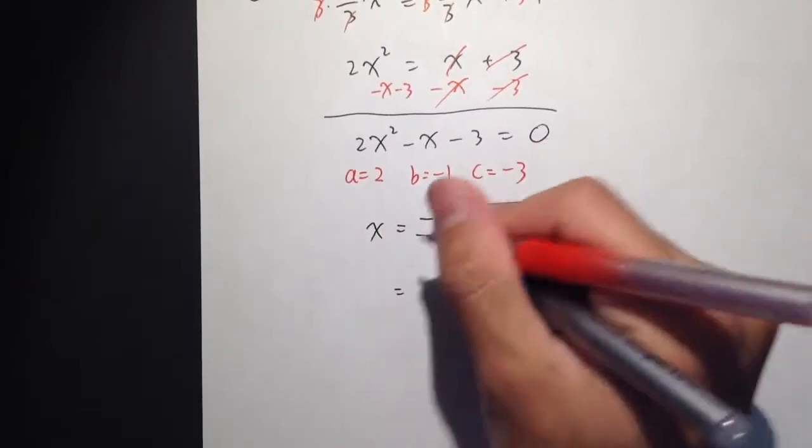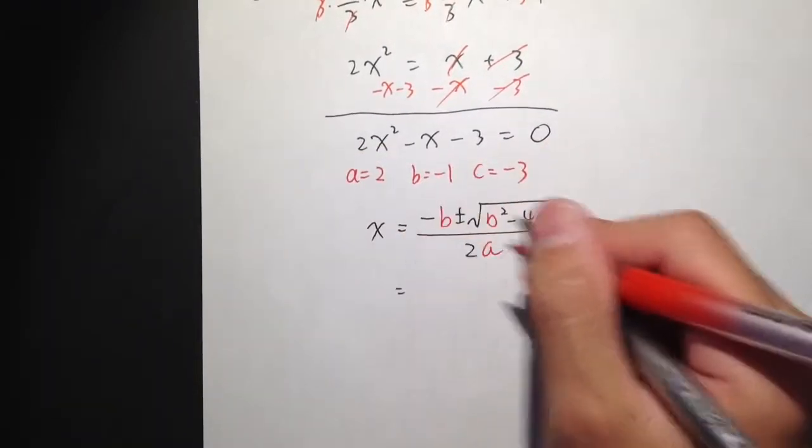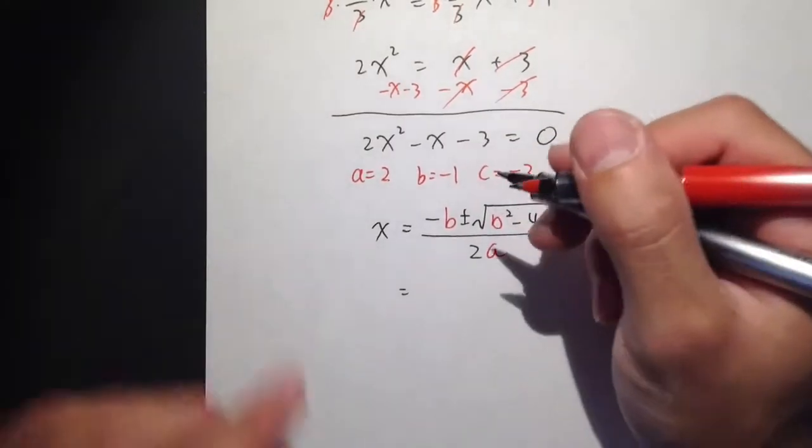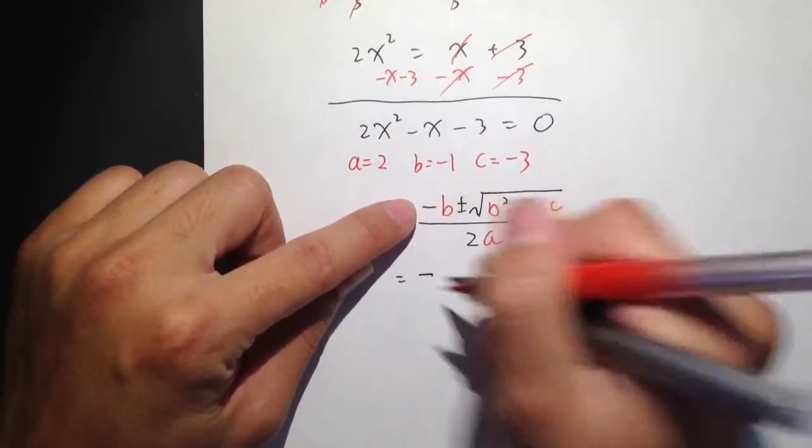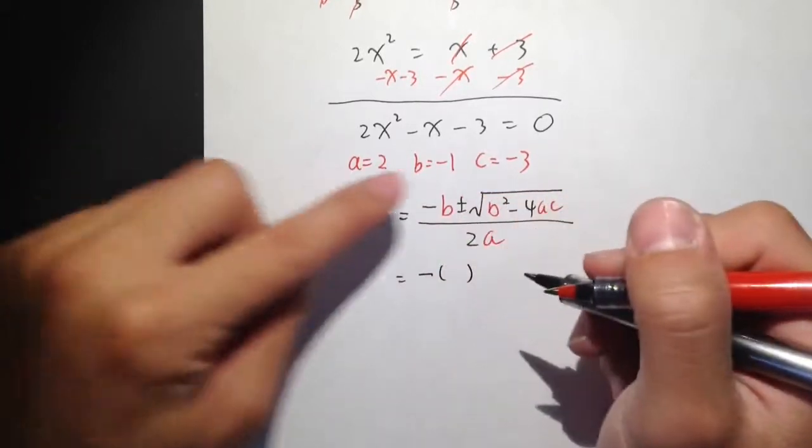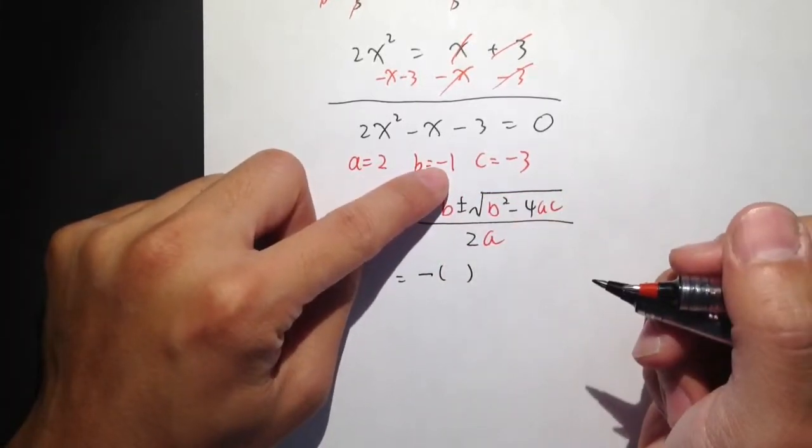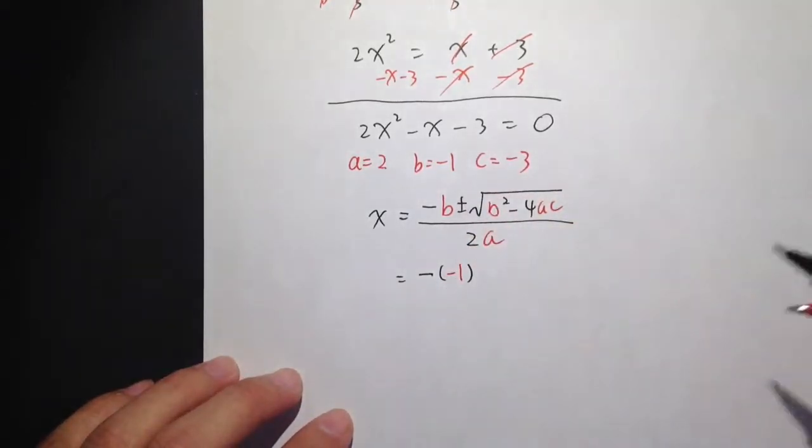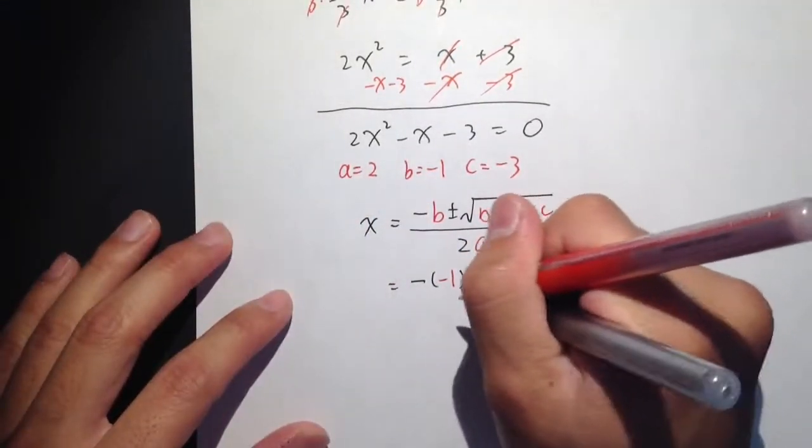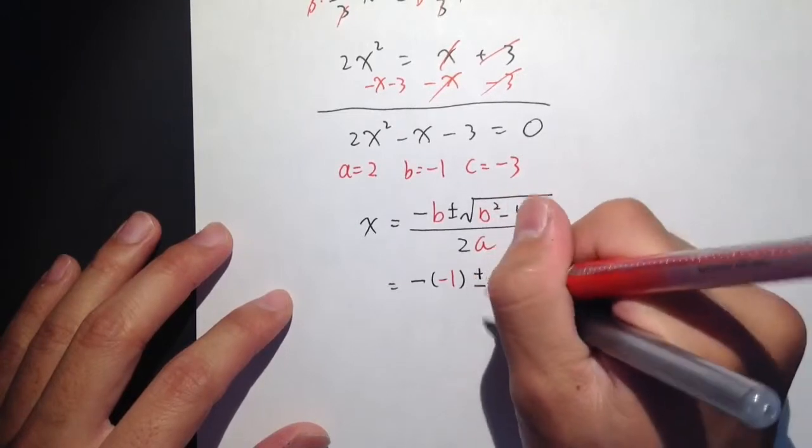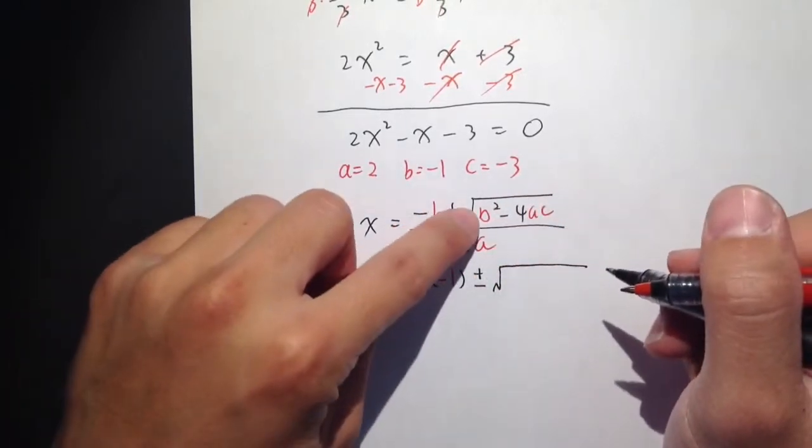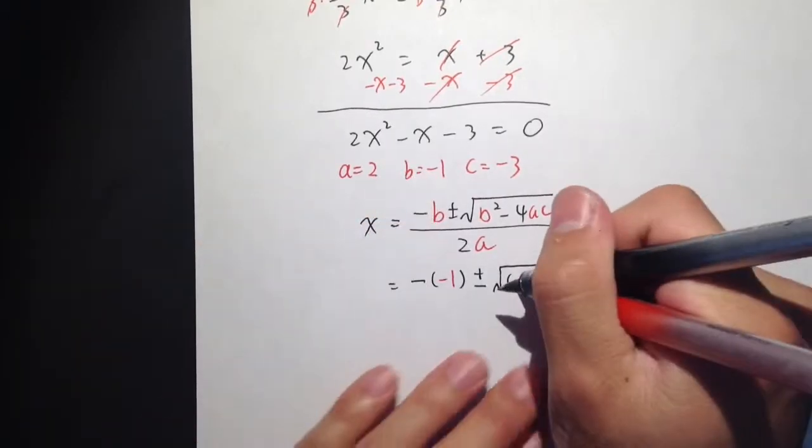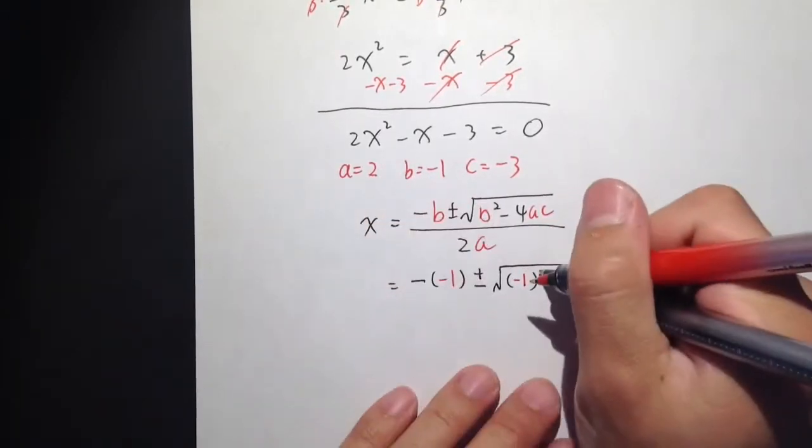Now, we have all these numbers and the formula. We are just going to plug in the numbers into the variables. So, begin with the negative. I see the B. I will open the parenthesis. B is negative 1, so bring this negative 1 into that parenthesis. I have plus minus. I have the square root. I see the B right here. I will open the parenthesis. B is negative 1.